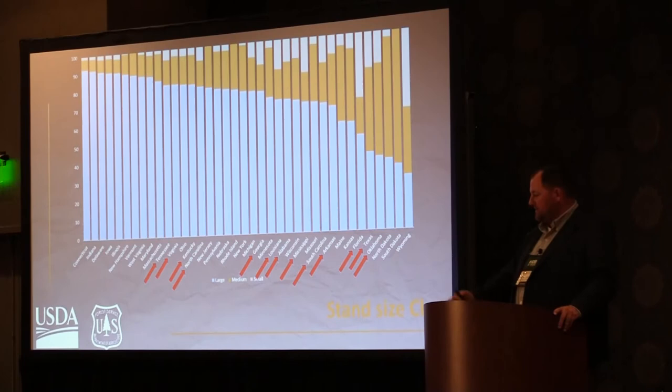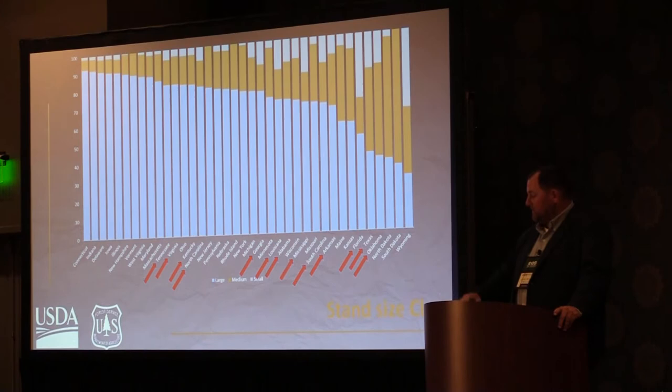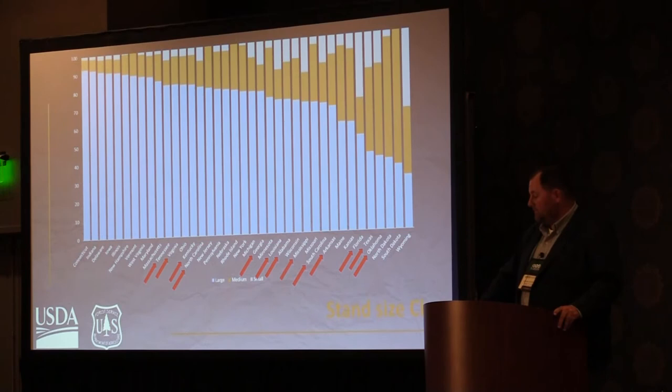Looking at all 13 southern states plus other states in the country, the story is pretty much the same — other than a few states on the far right, there are plenty of large trees.